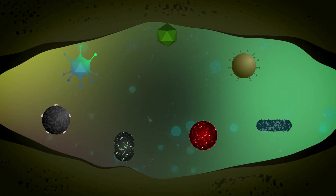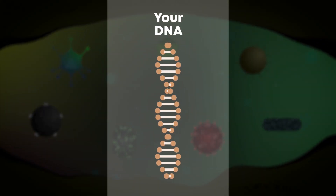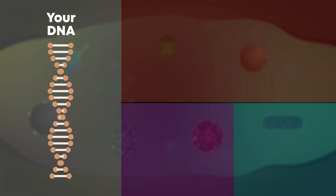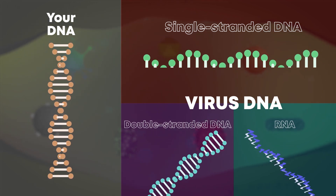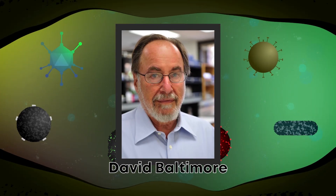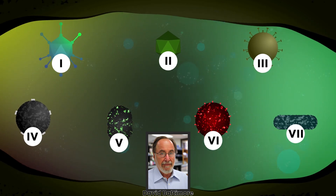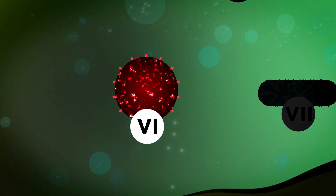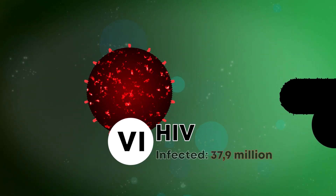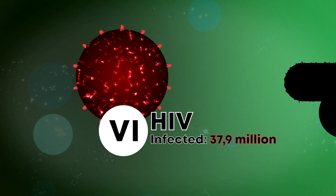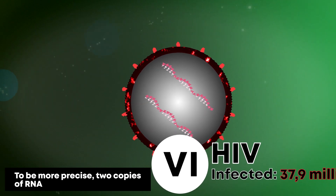Viruses are extremely diverse in nature. Your hereditary information is recorded in double-stranded DNA, but such monotony is boring for viruses — their information can be encoded in single-stranded and double-stranded DNA, and even in RNA. In 1971, David Baltimore created a classification ordering viruses according to the type of their genome, with seven classes in total. The well-known HIV, which has infected about 38 million people worldwide, belongs to Baltimore's sixth class — viruses with single-stranded RNA inside their capsid.